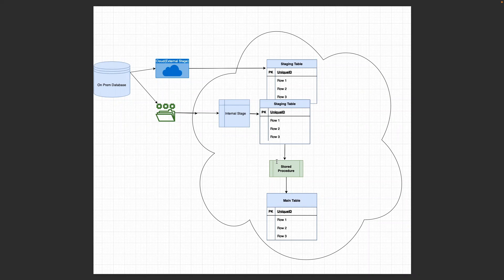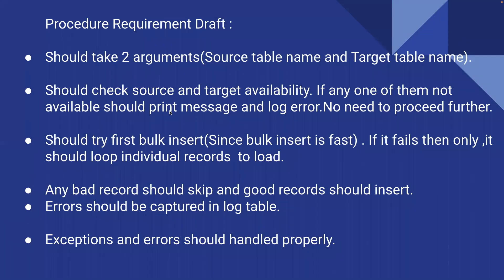Let's discuss what we expect from this stored procedure — the requirements. First, the stored procedure should take two arguments: one is the source table, which is the stage table where raw data is available, and the other is the target table, which is where the data needs to be moved after all transformation logic. When we execute the stored procedure it should load data from the stage table to the main table.